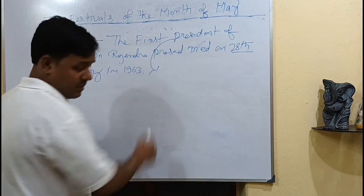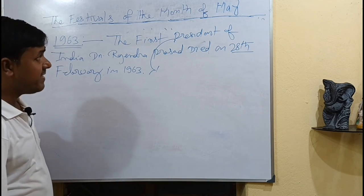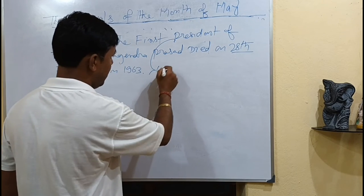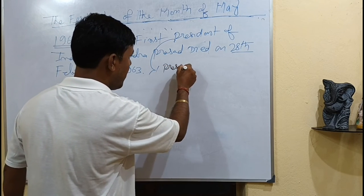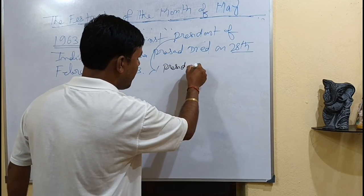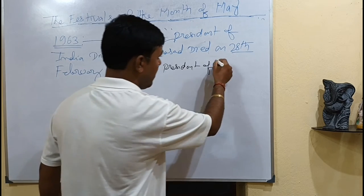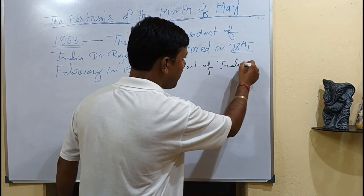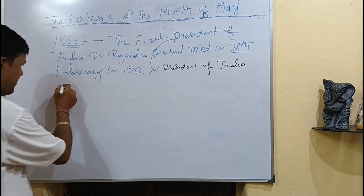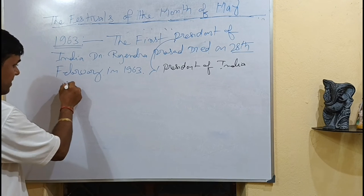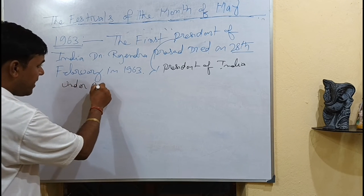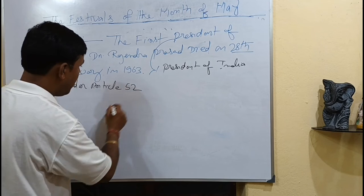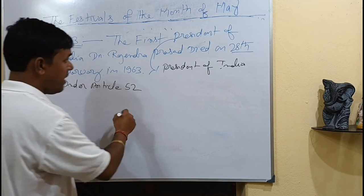Regarding the President of India in the Constitution: the President of India is provided under Article 52, in Part 5 of the Constitution of India. There are 22 parts in the Constitution of India.